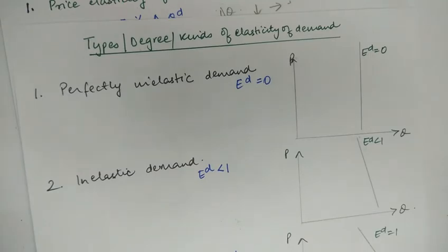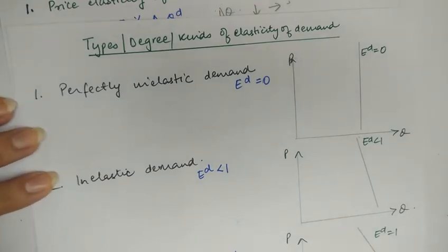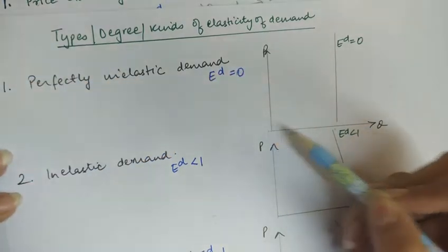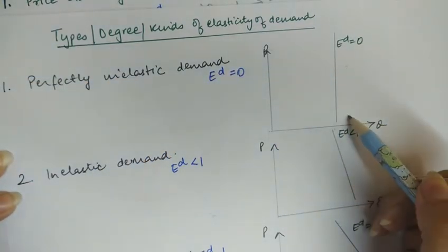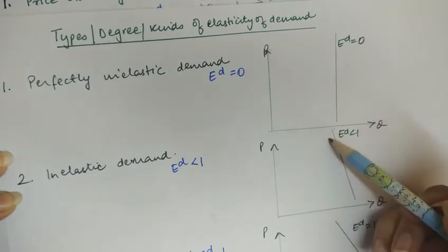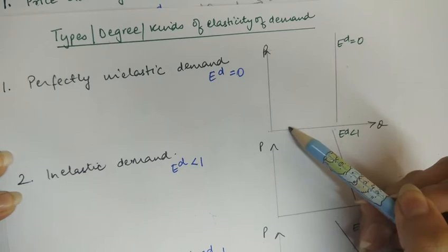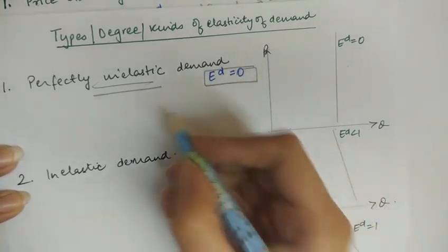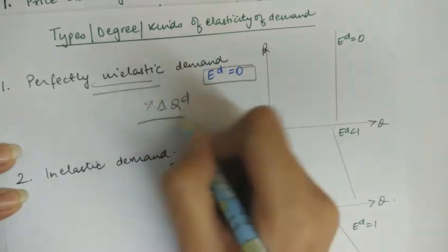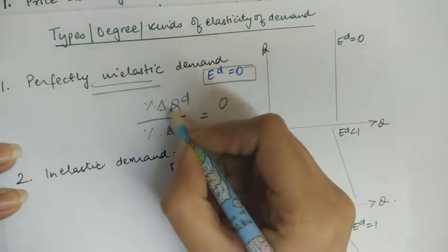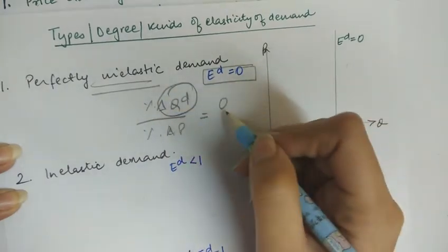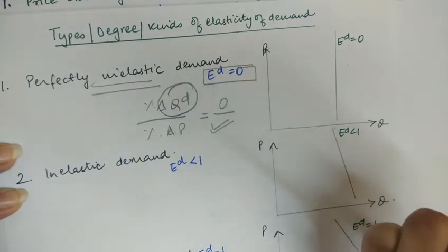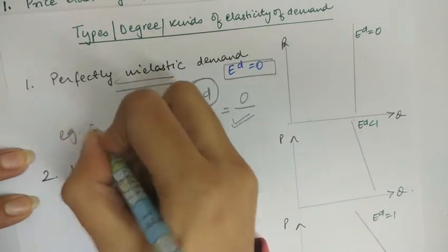Now we will talk about different kinds of price elasticity of demand. First, perfectly inelastic demand: as you can see from the figure, when the price of the commodity changes, the quantity demanded does not change at all. The elasticity of demand is zero because the percentage change in quantity demanded is zero regardless of the change in price. An example of this can be salt.